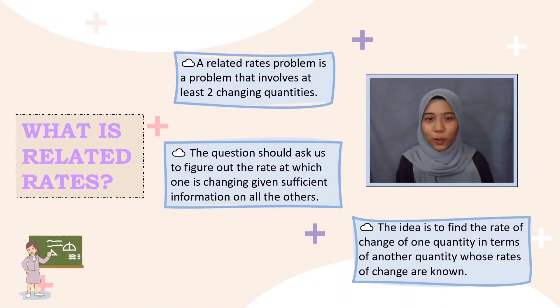So, let's get to know what is related rates problem. A related rates problem is a problem that involves at least two changing quantities. The question should ask us to figure out the rate at which one is changing given sufficient information on all the others.